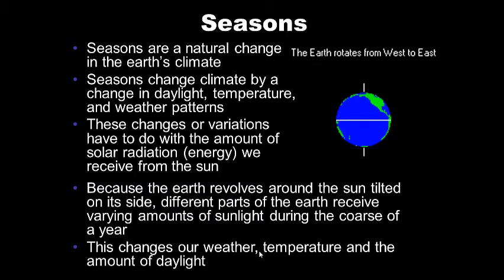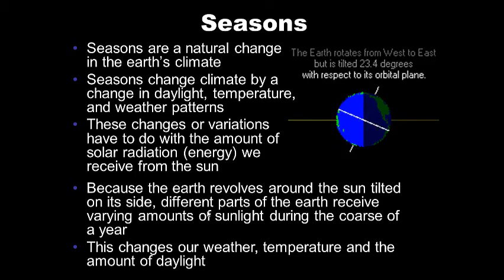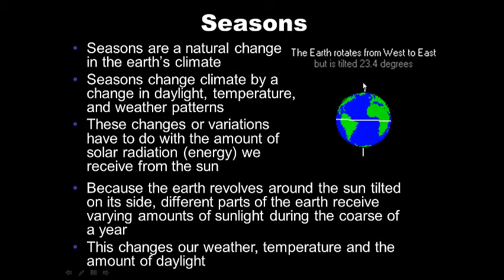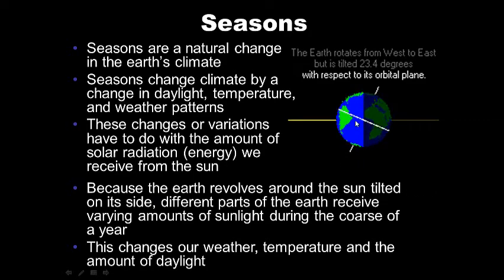In the wintertime there are shorter hours of light; in the summertime, more hours of sunlight. It has nothing to do with how close or far we are from the sun. Our seasons are the result of Earth's tilt of 23.4 degrees on its axis — Earth is slightly tilted, and because of that, we get our seasons.